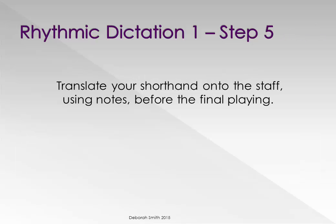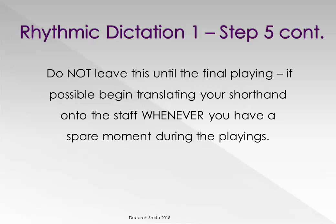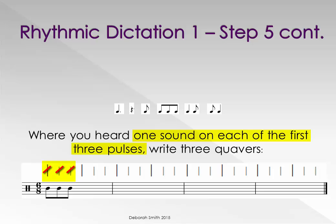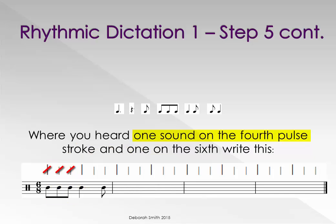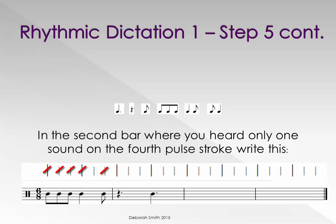Translate your shorthand onto the staff using notes before the final playing. Do not leave this until the final playing. If possible, begin translating your shorthand onto the staff whenever you have a spare moment during the playings. Where you heard one sound on each of the first three pulses, write three quavers. Where you heard one sound on the fourth pulse stroke and one on the sixth, write this. In the second bar, where you heard only one sound on the fourth pulse stroke, write this.